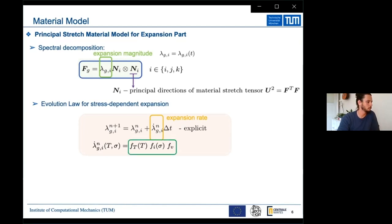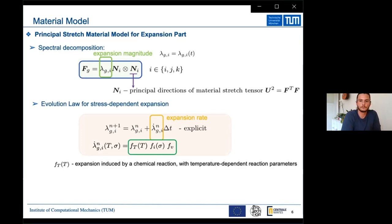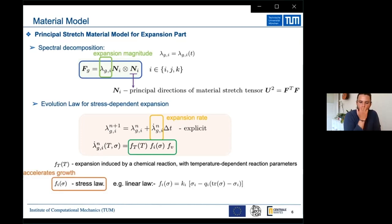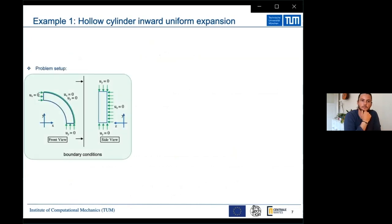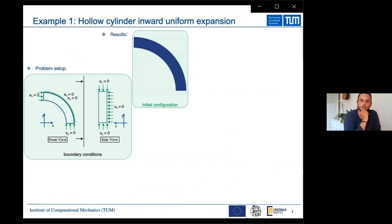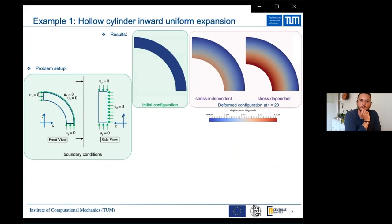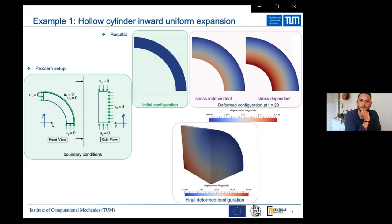The expansion rate is defined by three functions: F_t, F_i, and F_p. F_t is the expansion induced by chemical reaction with temperature-dependent reaction parameters. F_i is the stress law which accelerates the expansion, and F_p is the function that prevents unlimited expansion. As an example, a symmetric hollow cylinder allowed to expand in radial and axial directions shows that the stress-dependent law accelerates the expansion, and the angular space is closed after expansion in the final deformed configuration.